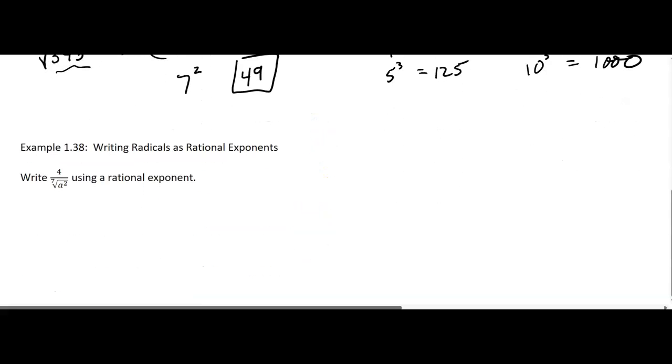All right. Now this next one, it's in radical notation, but we want to write it with a rational exponent. So take it one step at a time. Right now we have 4 over the 7th root of a squared. Okay, the 4, there's the 4. I can write the denominator as a to the 2/7ths. Right?